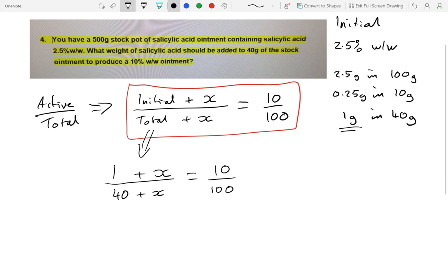Now this sort of formula, the standard approach is whatever's on the bottom is multiplied by the top on the opposite side. So 100 times by all of that, and then 40 plus x times by 10.